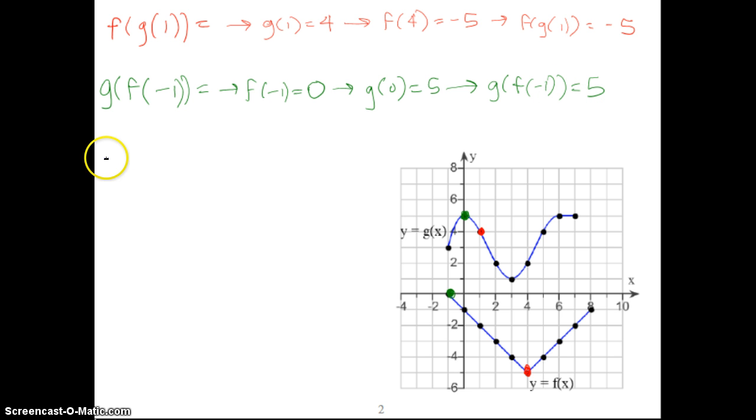What if we have f of f of 4? Let's do f of f of 4. So, again, first thing we're going to do is work from the inside out. We need to find f of 4. So, we go to the f curve, f of 4, x equals 4. f of 4 is negative 5.